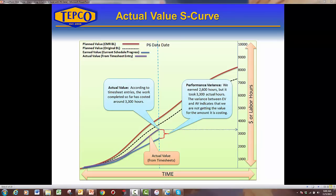Here's the same graph with the actual value added. You can see a variance between the actual value and the earned value as of the data date — these indicate the CPI, which gives us the performance factor to determine how much more the project may cost. The actual hours are higher than earned hours, and the earned hours are below the planned value. With earned below planned and actual higher than earned, this is the worst case scenario a project could be in.